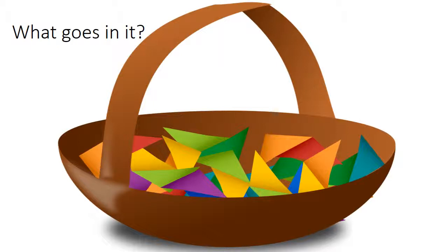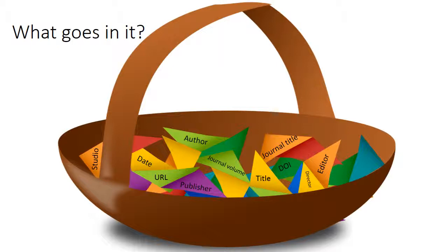So what goes into your citation? An author, a date, a title, a publisher, a journal title, journal volume, a URL or DOI. The DOI is specific to APA style of citations. The director, an editor, a studio name depending upon the type of resource that you're citing. A journal issue, a location, and the resource type.